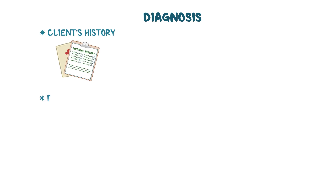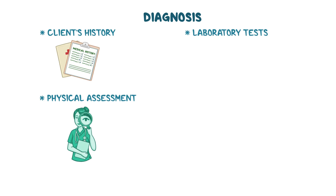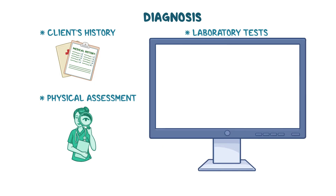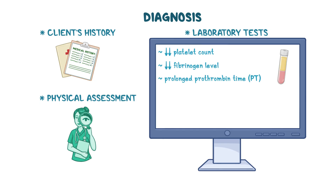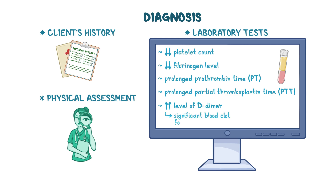The diagnosis of DIC starts with the client's history and physical assessment, followed by laboratory tests. Typical laboratory findings include a CBC that shows a decreased platelet count, decreased fibrinogen level, as well as a prolonged prothrombin time (PT) and prolonged partial thromboplastin time (PTT), both of which reflect decreased levels of circulating clotting factors. In addition, there's an elevated level of D-dimer, which is a fibrin degradation product indicating significant blood clot formation and subsequent fibrinolysis.